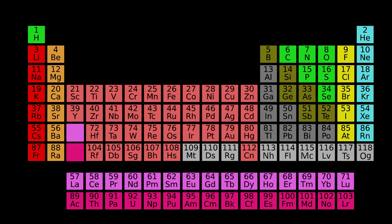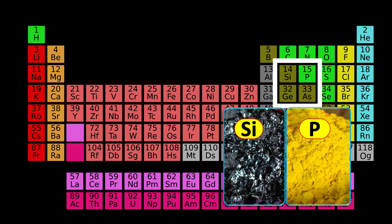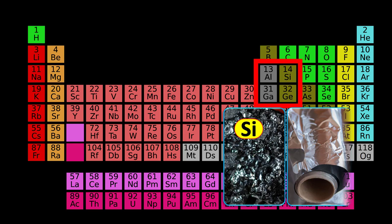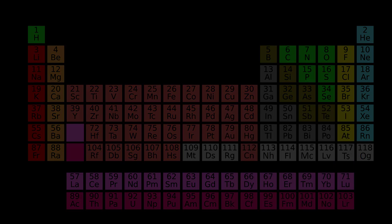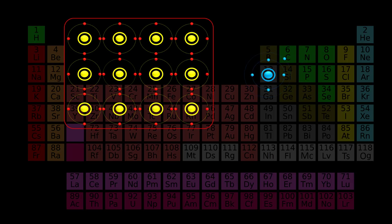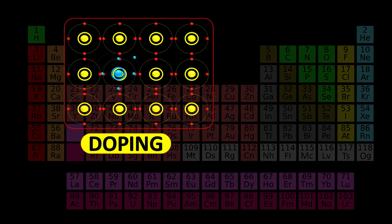If we add impurity atoms of an element from group 5 in silicon or germanium, we get an n-type semiconductor. If we add an element of group 3 in silicon, we get a p-type semiconductor. Adding impurity atoms in a pure semiconductor is called doping.